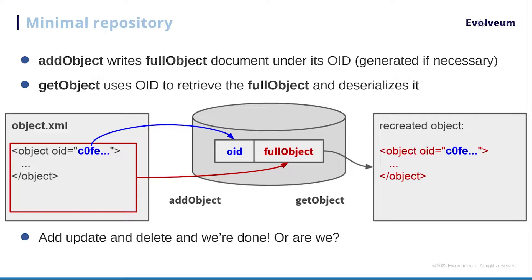The minimal repository is one where you insert an object — you have this XML representing the object — you load it in during import, and it uses the provided OID or generates one if missing, and stores it as a blob under 'full object'. It's parsed and reformatted, and then you can load the object by OID. We then add update and delete operations.